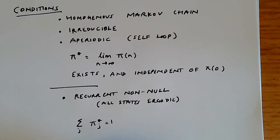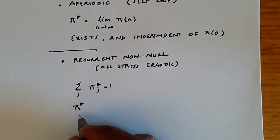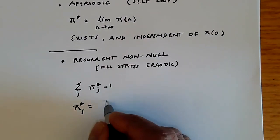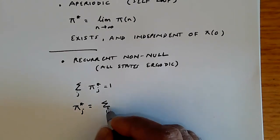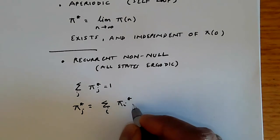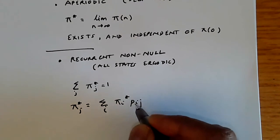But moreover, we're given this particular equation, which is pi j star is given by sum over i, pi i star, pi i j. In other words,